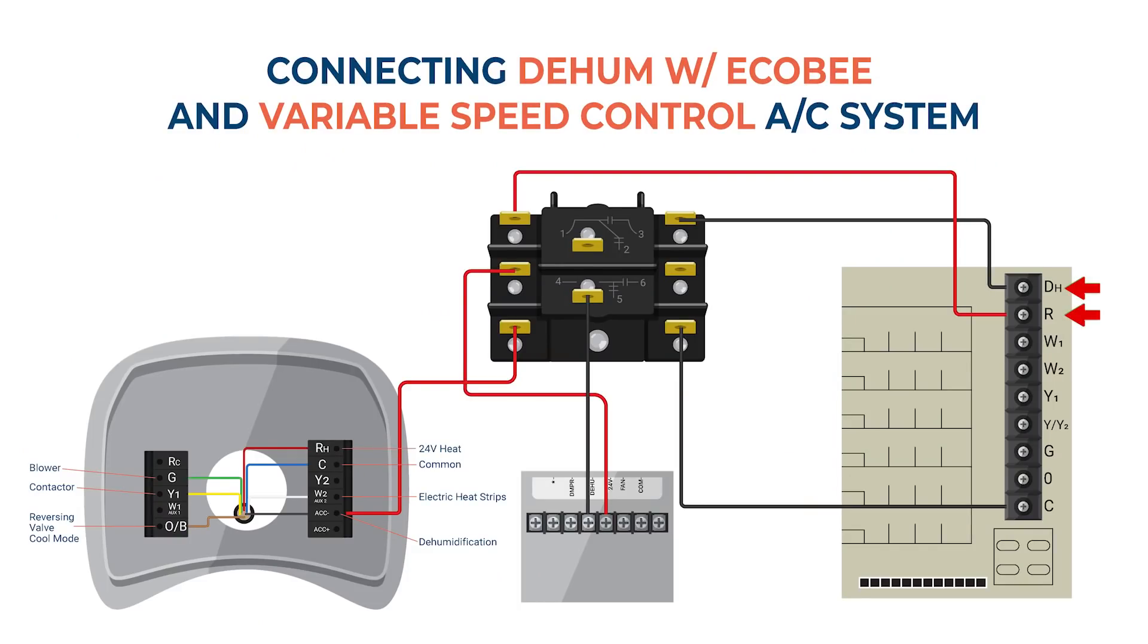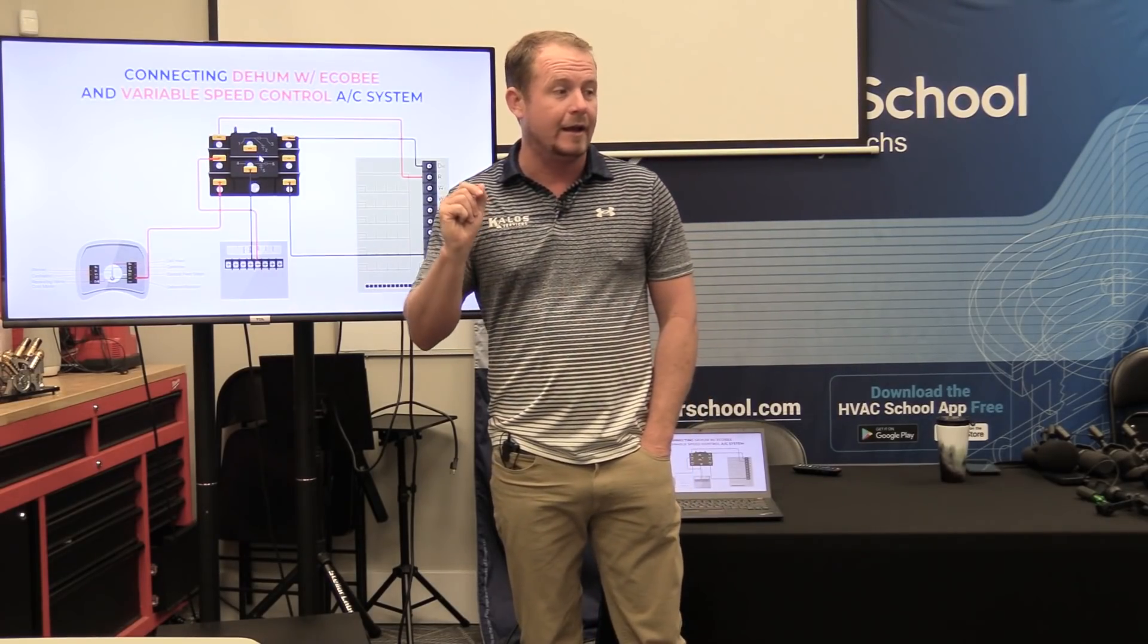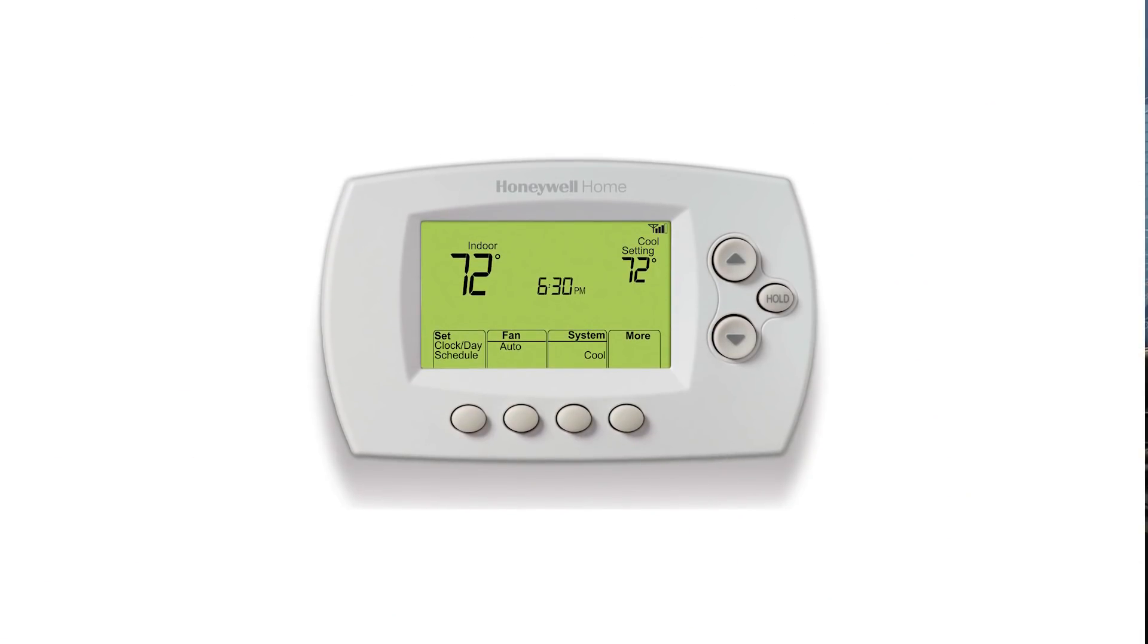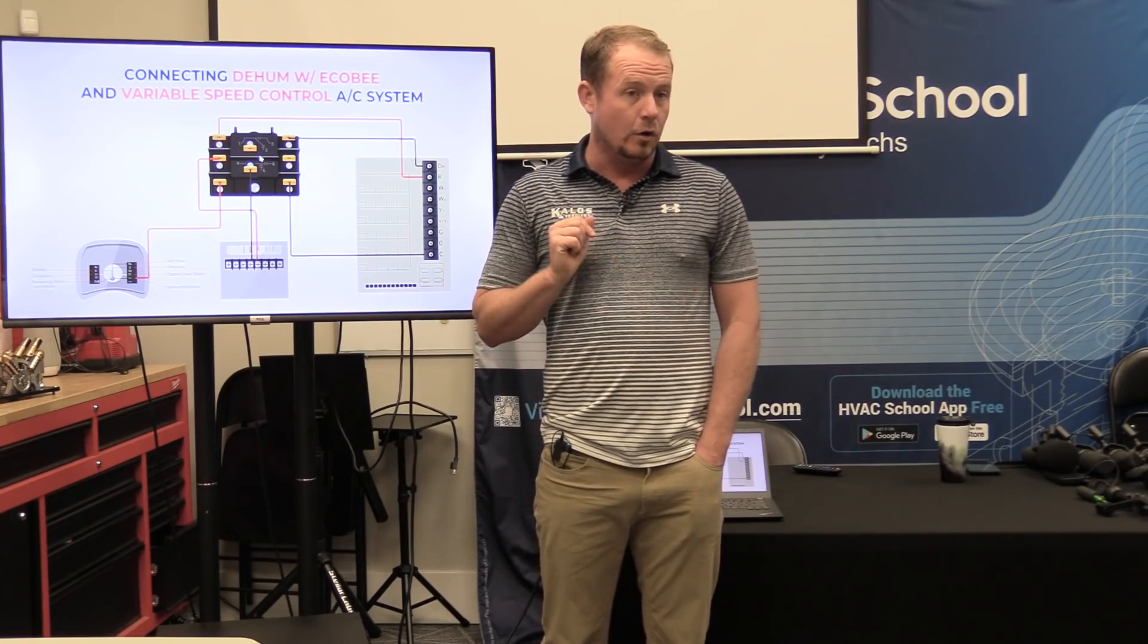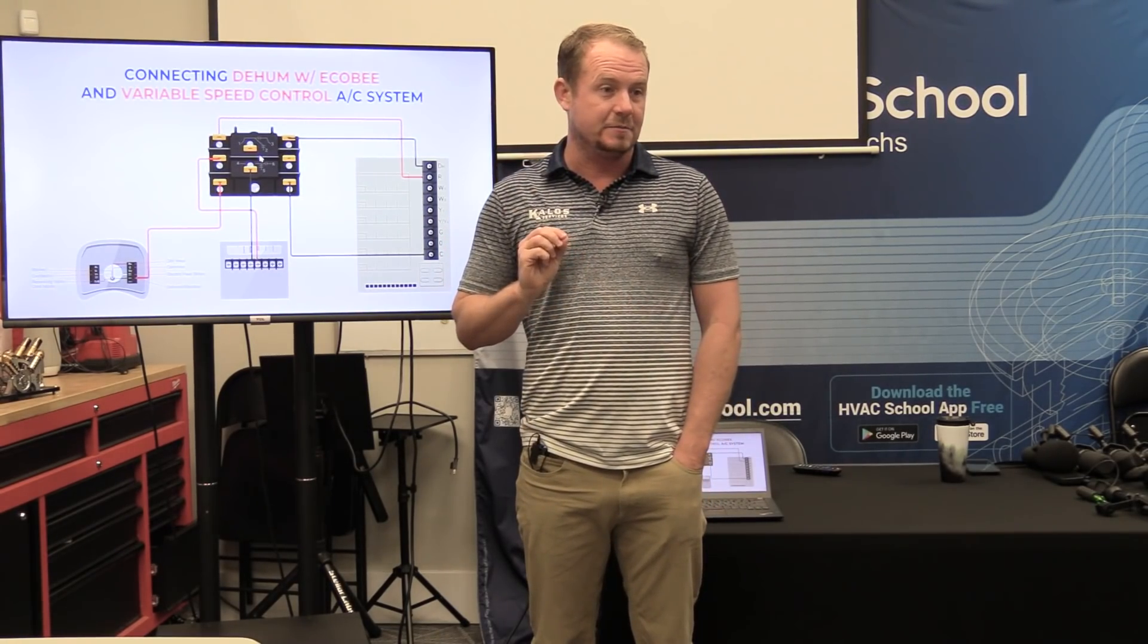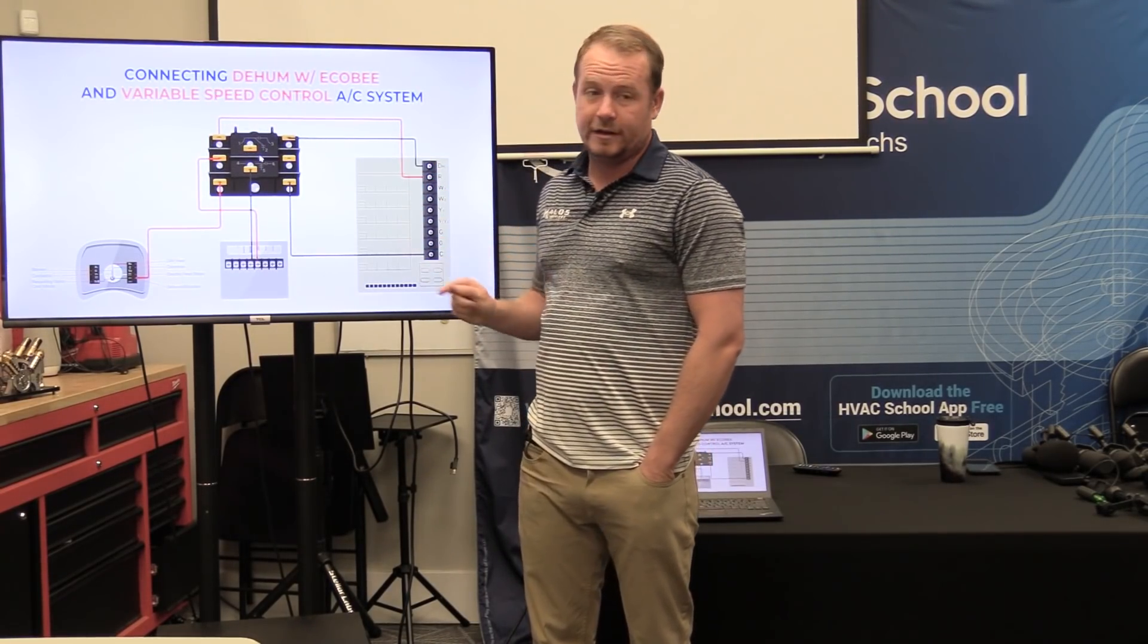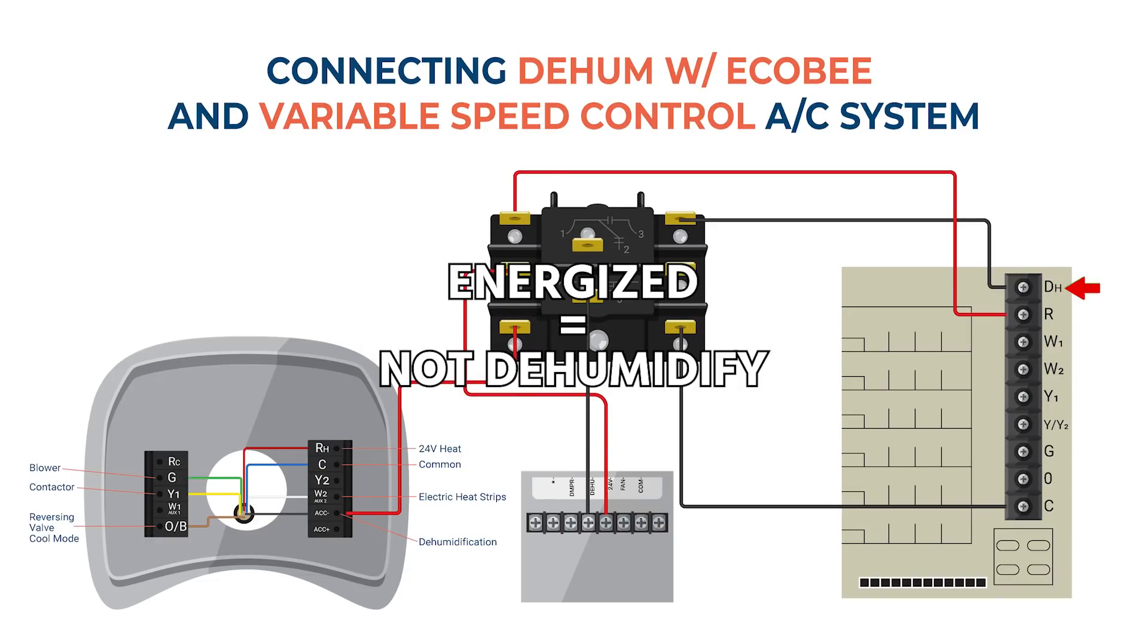If we didn't have an EcoB at all or a Nest, any sort of thermostat that can control humidity, what would we have set up on this board? Jumper wire. We have a jumper wire between DH and R. And what would that do? It removes dehumidification by energizing DH all the time. If DH is energized all the time, then the blower always runs at full speed. Quick note: if you ever replace a thermostat that has a dehumidification mode with one that does not, you need to make sure that you put that jumper back between DH and R. So DH energized all the time equals not dehumidify.